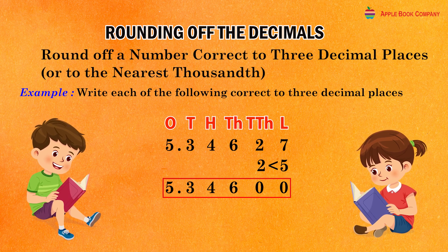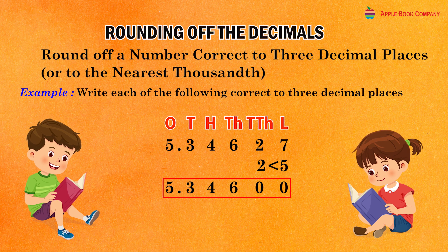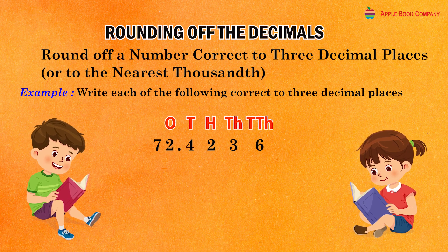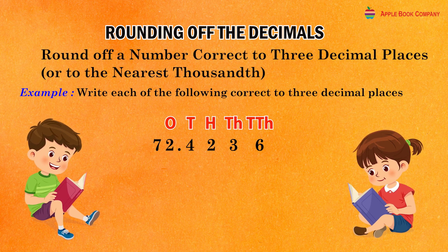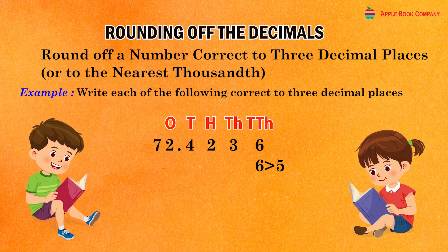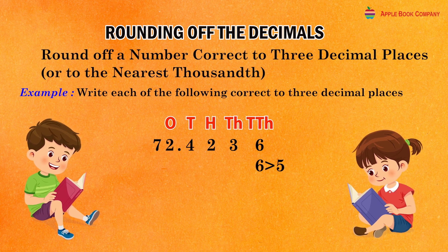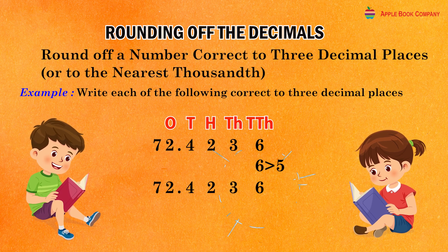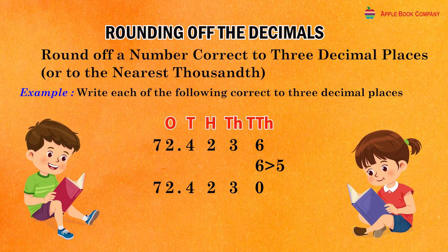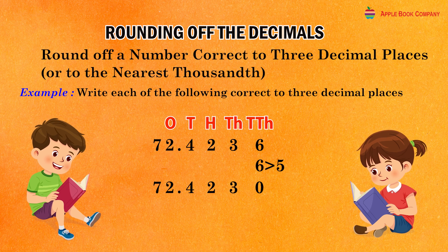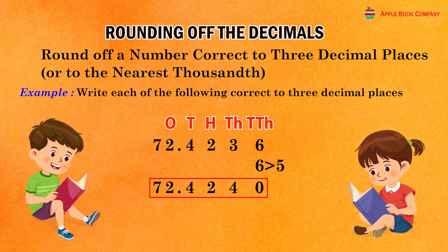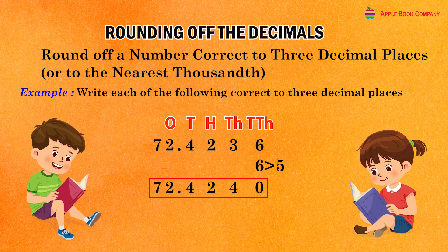Rounded number is equal to 5.34600. The given decimal is 72.4236. Here, the digit at the fourth decimal place is 6 which is greater than 5. So, replace each digit right to the fourth decimal place and onward by zero and increase the digit at the third decimal place by one. Rounded number equal to 72.4240.